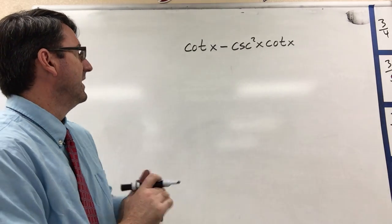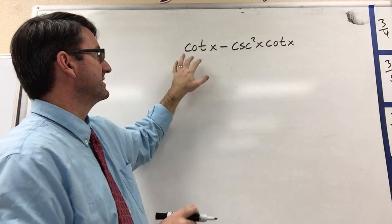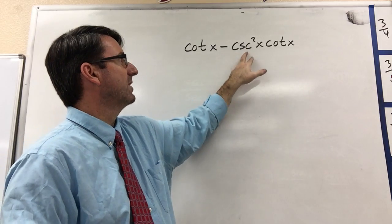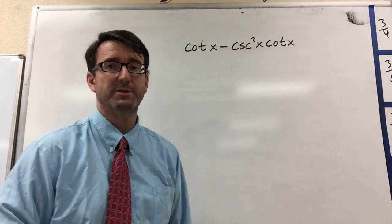Alright, number five asks us to simplify this expression: cotangent x minus cosecant squared x times cotangent x.